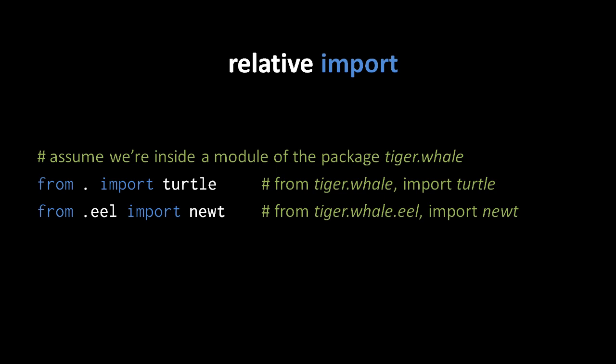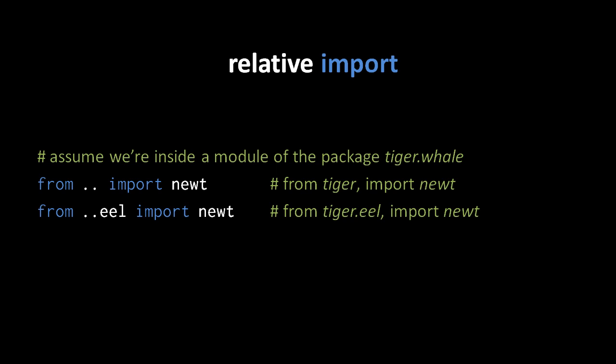Notice that this is really very different from what a from import normally does. A from import normally is about importing specific attributes from some particular module, whereas here we're importing modules from a particular package. In these relative imports it's possible to use multiple dots. A single dot signifies the current package, two dots signifies one level up. So in tiger.whale, two dots means just the package tiger. From .. import newt means from tiger import newt, and from ..eel import newt means from tiger.eel import newt — we went up one level to tiger, then down to eel inside tiger.